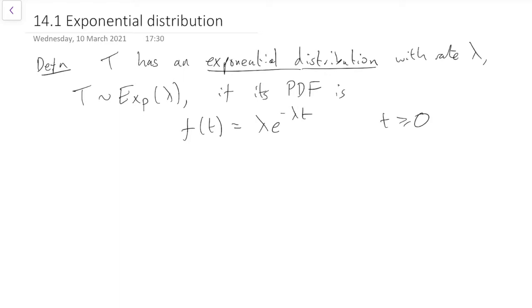As a reminder that's the definition of the exponential distribution and we use this as a model of times that you wait for things to happen like how long will it be until my light bulb breaks or how long will it be until the next bus arrives or how long will it be till someone takes money out of their bank account.